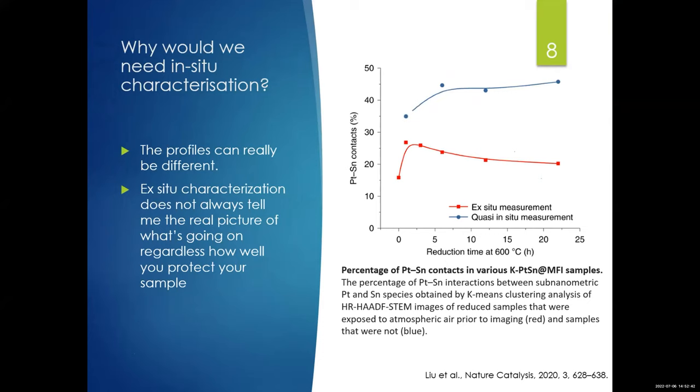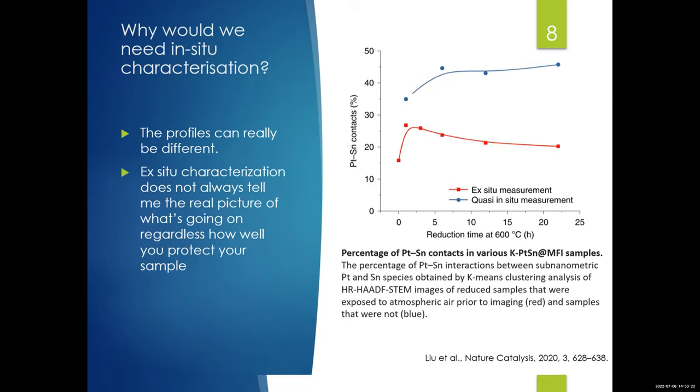So why would we need in-situ characterization? The profiles can be quite different. For example, in this example by Liu et al. So in this platinum-tin catalyst, under in-situ or quasi-in-situ measurements, you can see the Pt-Sn contact is quite different between the in-situ measurement and the ex-situ measurement. So it is very important to do in-situ measurement or even operando measurement to tell exactly what is happening during catalysis or during reaction. Ex-situ characterization does not always tell us the real picture of what's going on regardless of how well you protect the sample.